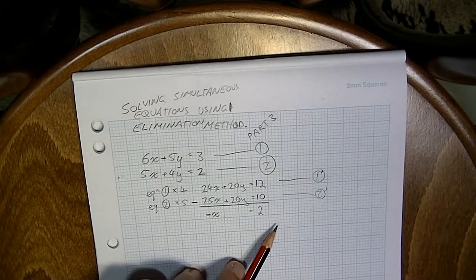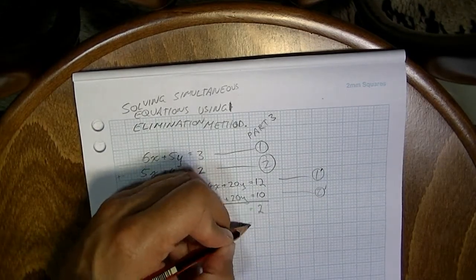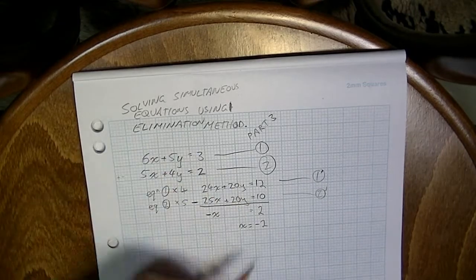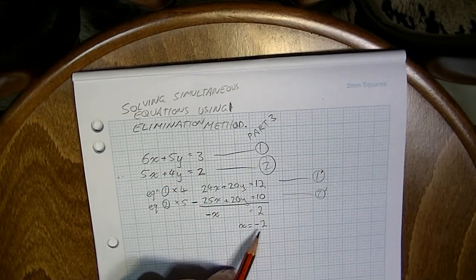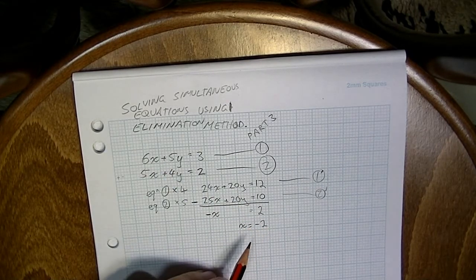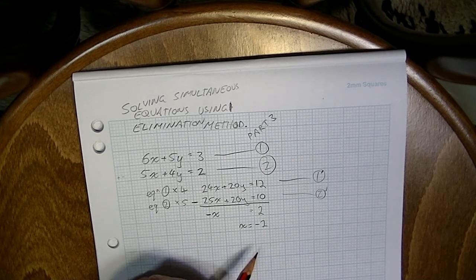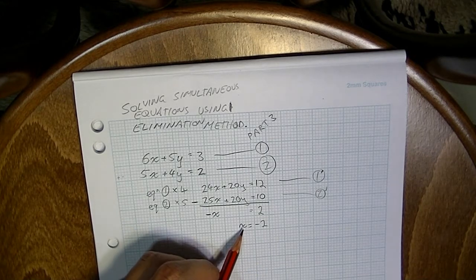So we know that negative x is equal to 2. You guys should have learned that that means that x is equal to negative 2, just by multiplying both sides by negative 1 or dividing both sides by negative 1. Okay, so x is equal to negative 2.